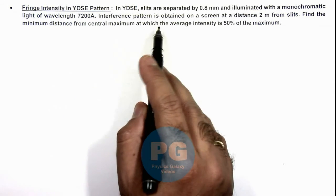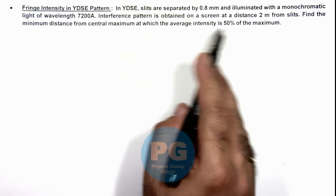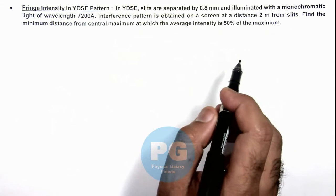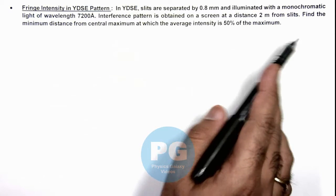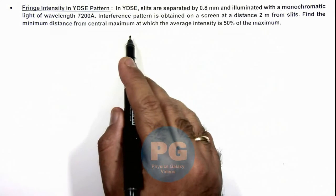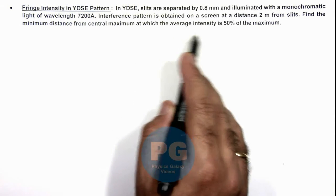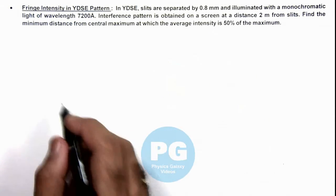An interference pattern is obtained on a screen at a distance 2 meters from slits. We are required to find the minimum distance from central maximum at which the average intensity is 50 percent of the maximum.